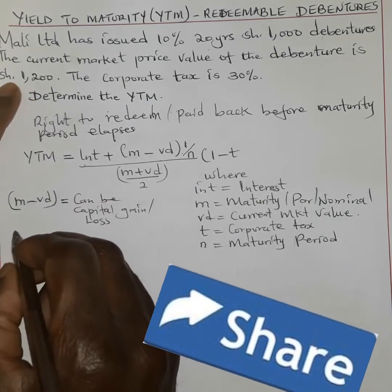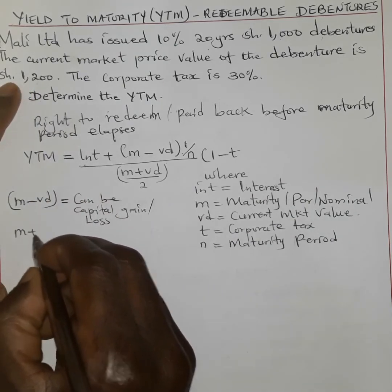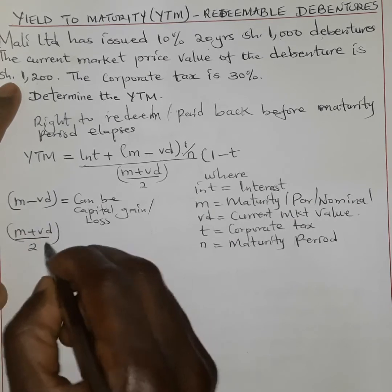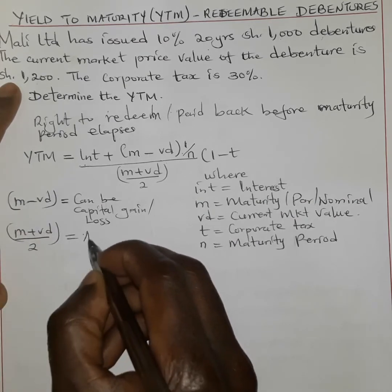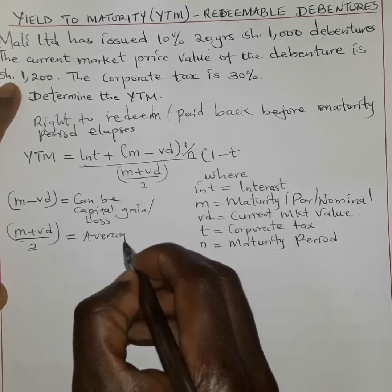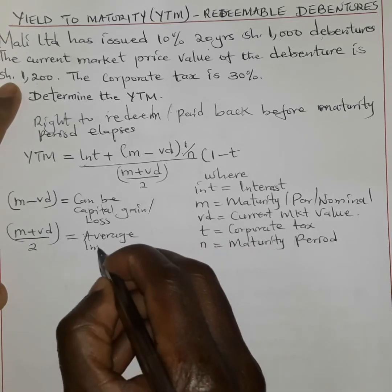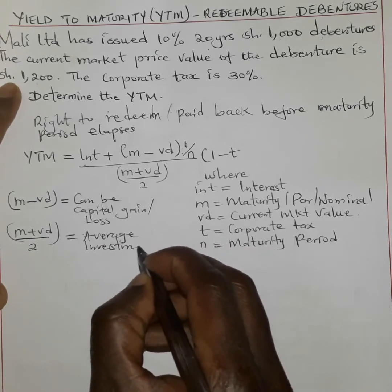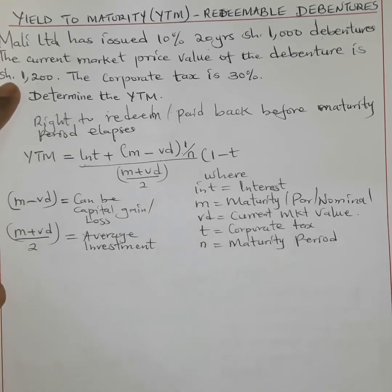Then we have M plus VD divided by 2, which corresponds to the average investment by the debenture holder.